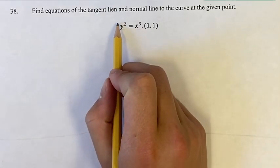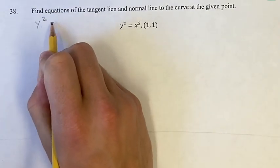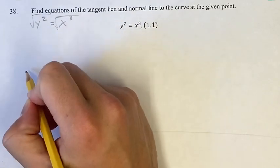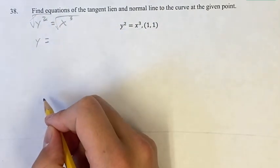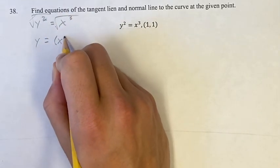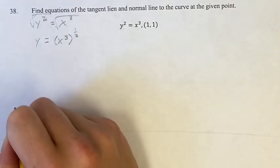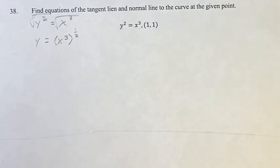Now we can't find the derivative with what we know of this just yet, but we can get it into a form that we can. So first of all, we want to get y on its own. y squared equals x cubed. We take the square root of both sides, then we'll get y on its own, since the square root of y squared is just y. That is going to be equal to the square root of x cubed, which you can think of as x cubed to the one-half power. The square root of anything is just that thing to the one-half power.